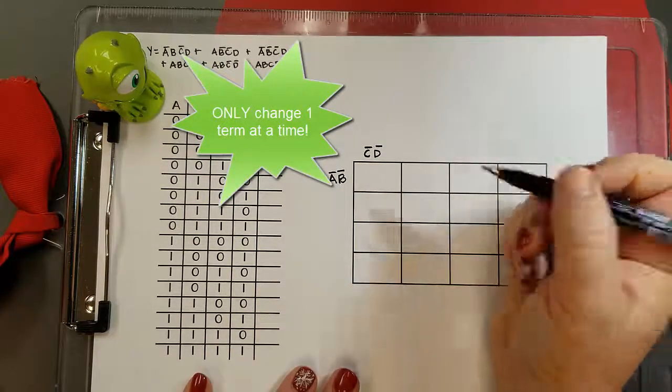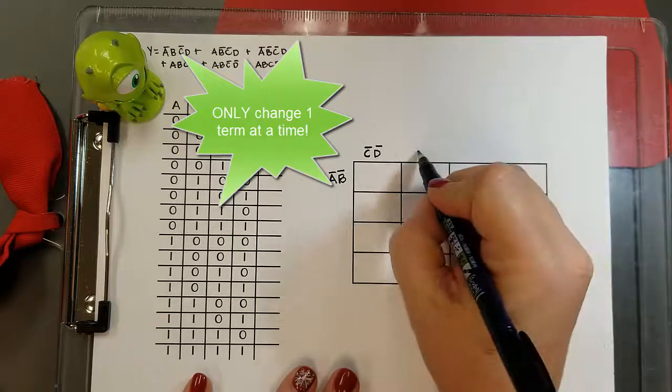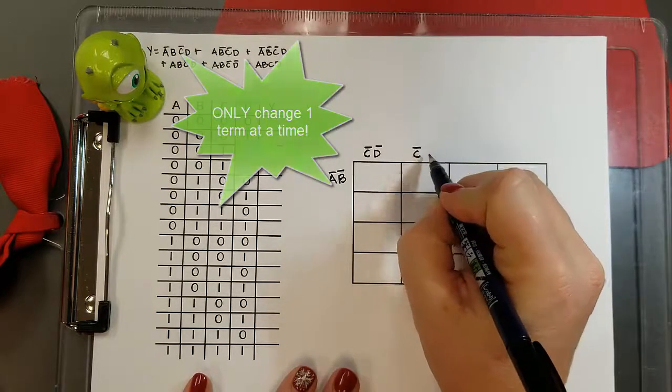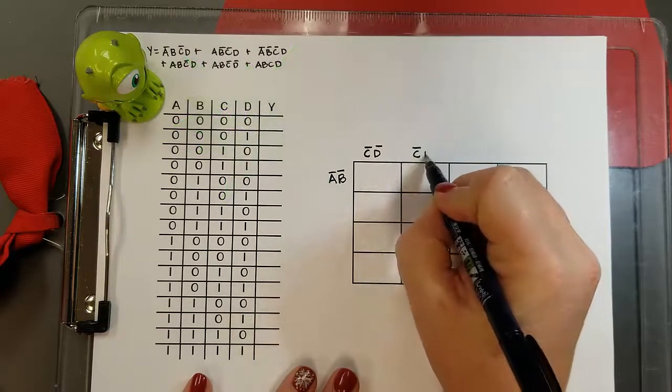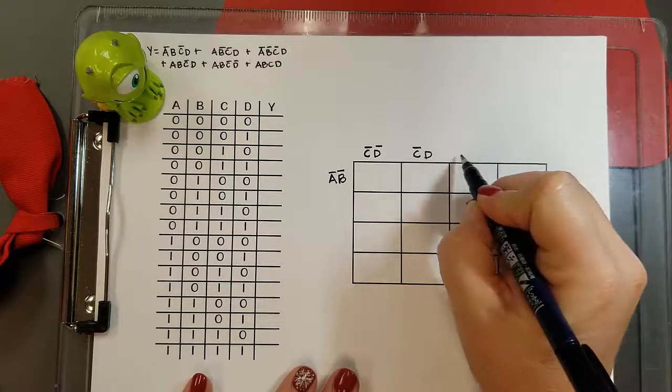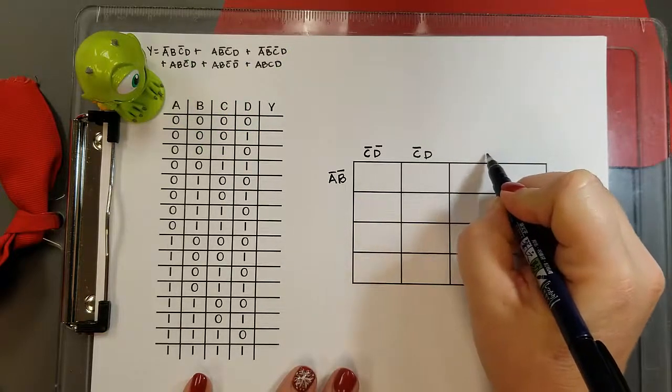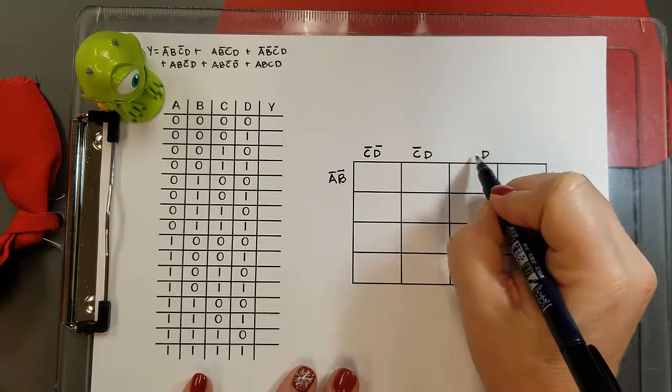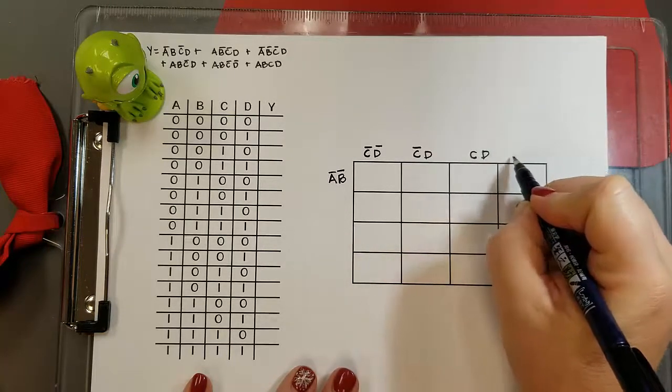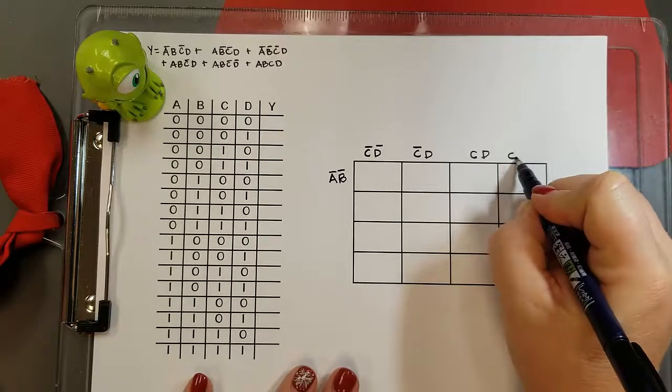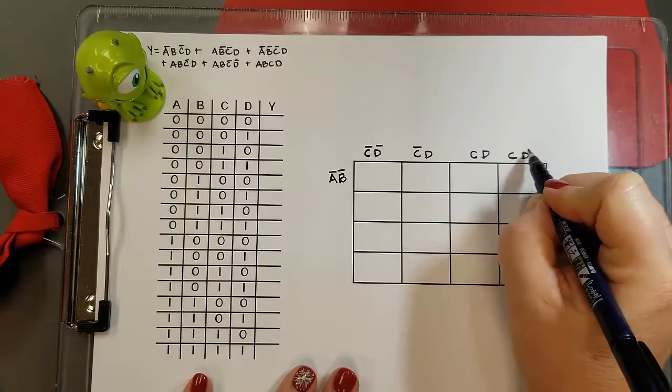As you see here, as I move from not C, D, I'm going to leave not C the same and only change D. Now when I move again, I can only change one term. So I need to keep D the same and change not C to C, and that changes my last term to C, not D.